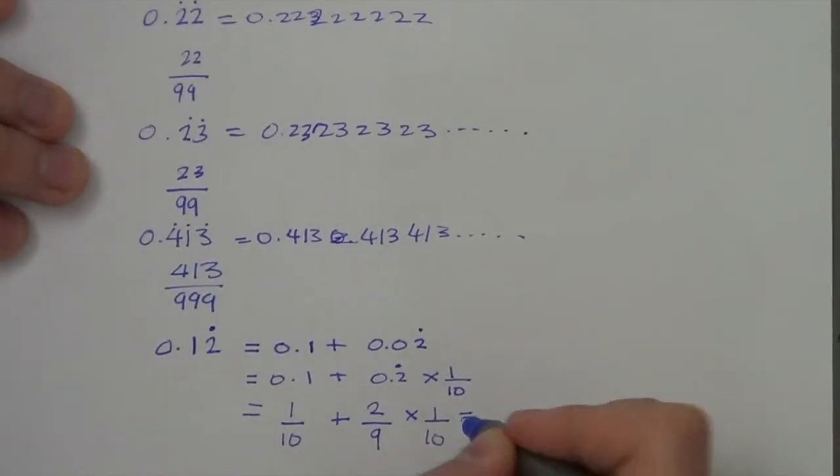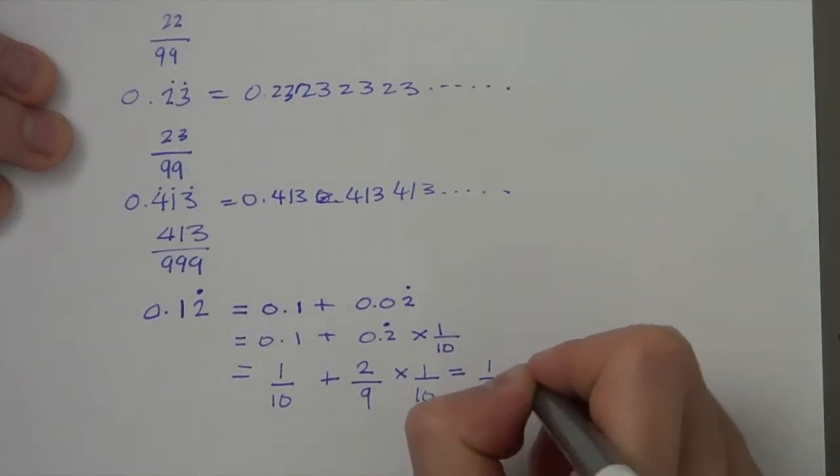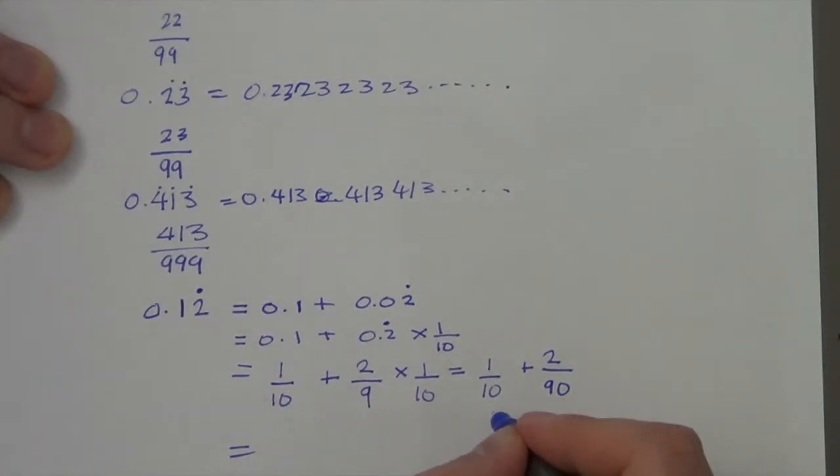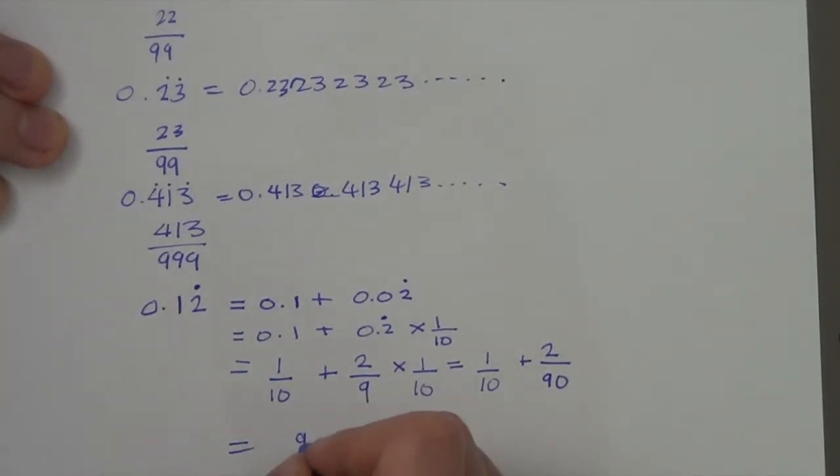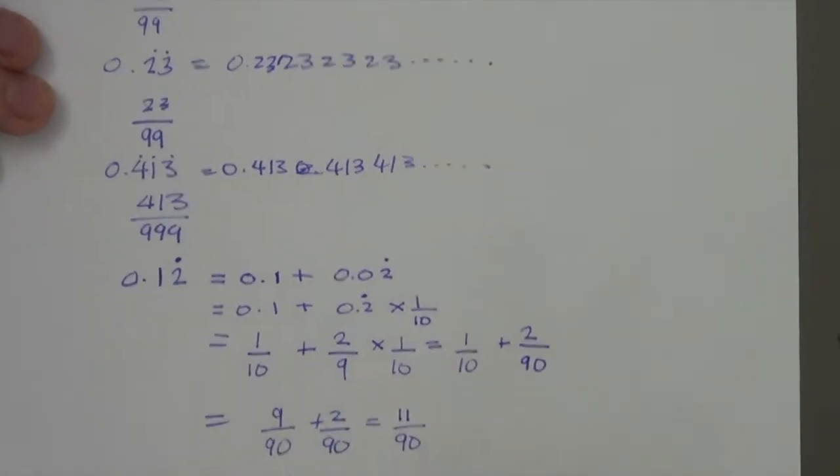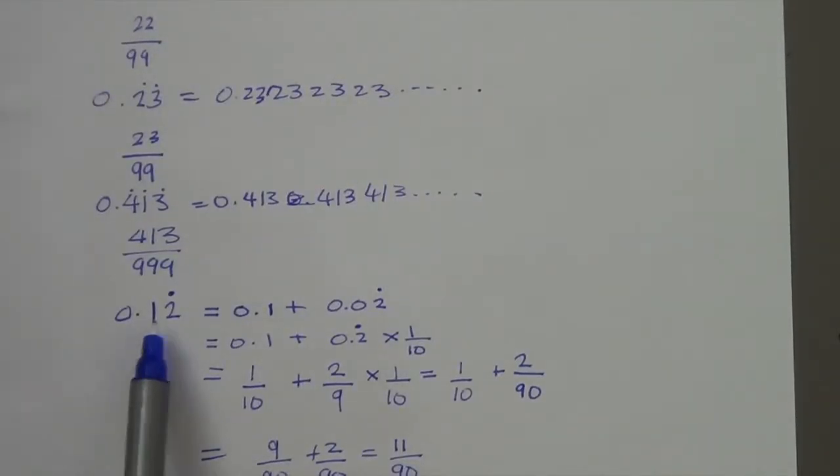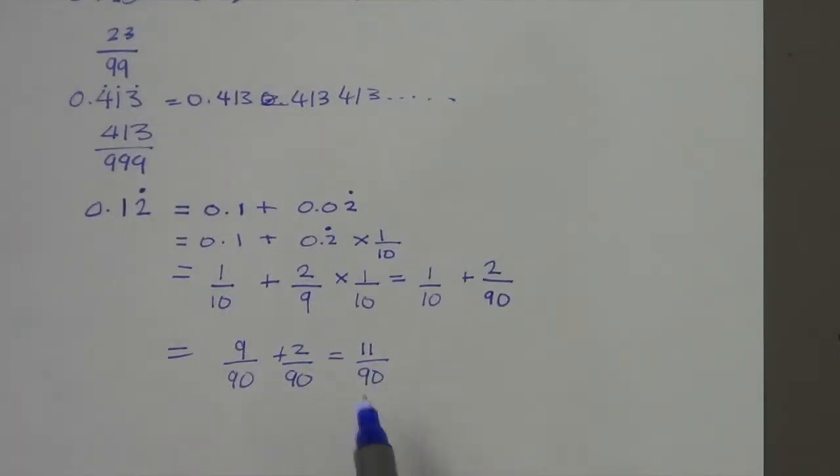And that is equal to 1 over 10 plus 2 over 90. Which if I make 10, 90, I get 9 over 90 plus 2 over 90. That gives me 11 over 90 as my final answer. So we have successfully converted 0.12 recurring to a fraction. And if you did 11 over 90 on your calculator, you would get the same answer there.